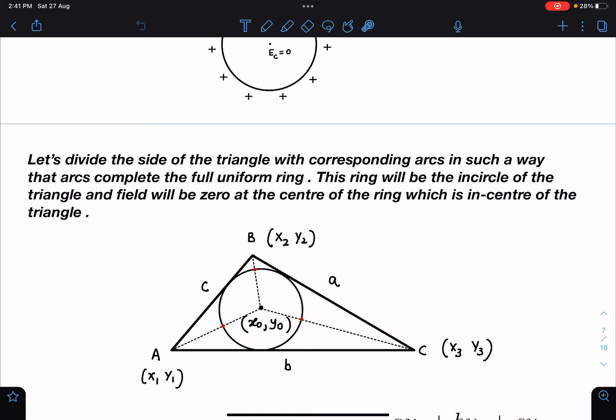So basically these three parts of the arc will give rise to the incircle of the triangle. That means now this uniform, because the field of these sides is corresponding to this arc, due to this it is corresponding to this arc, and due to this it is corresponding to this arc.